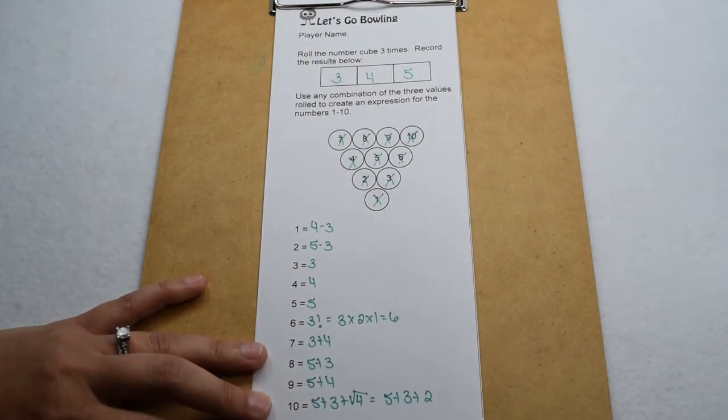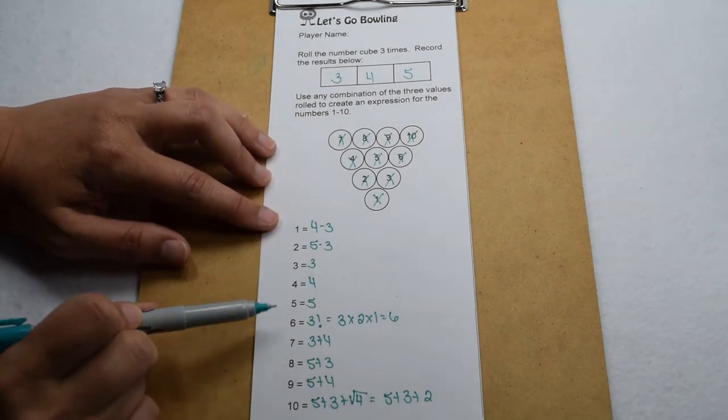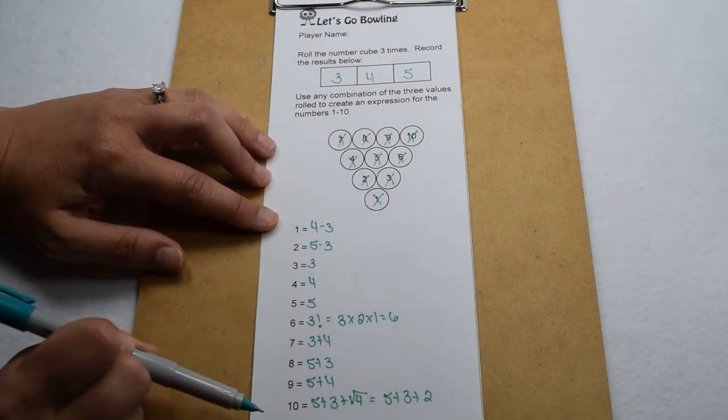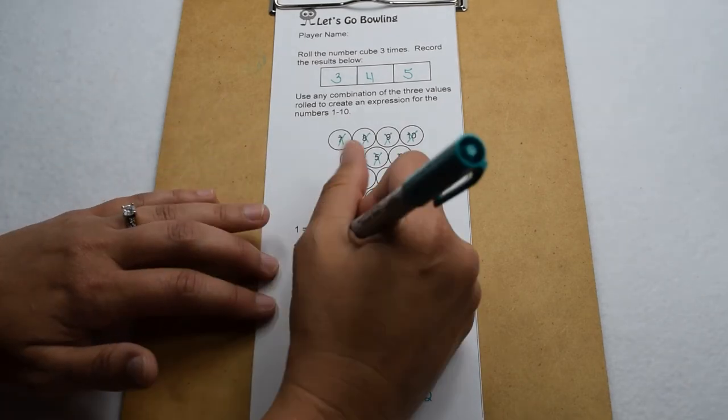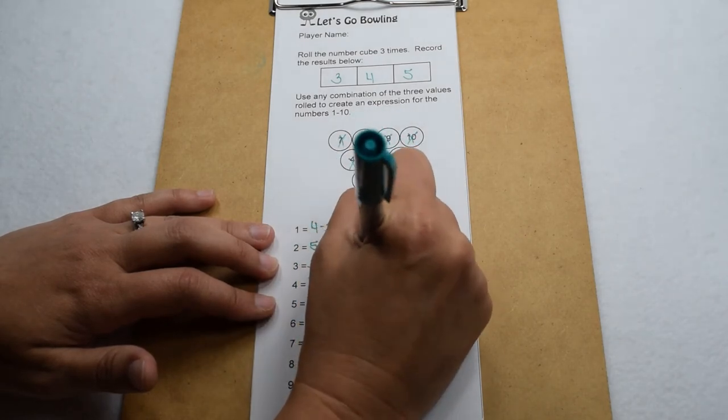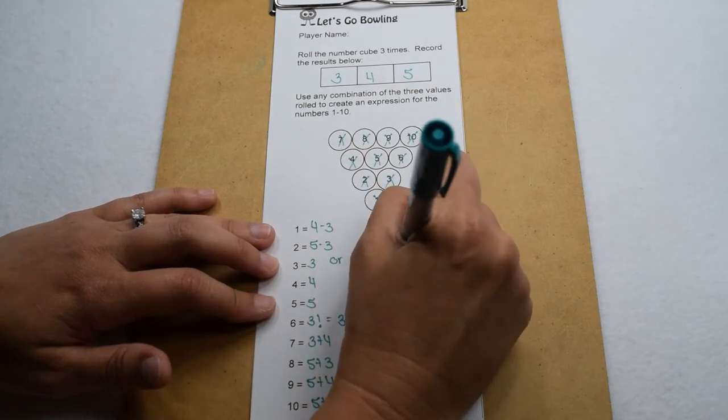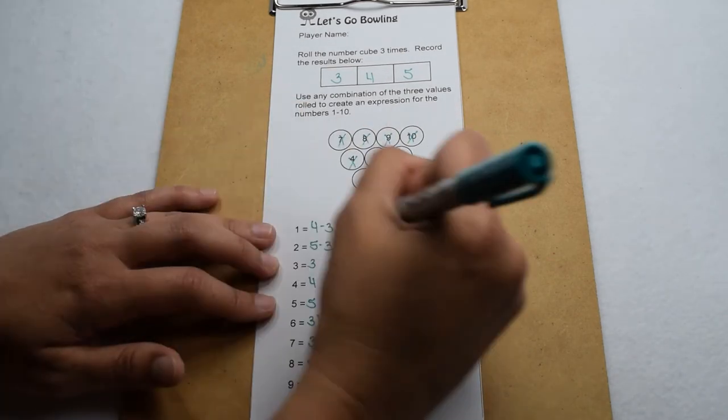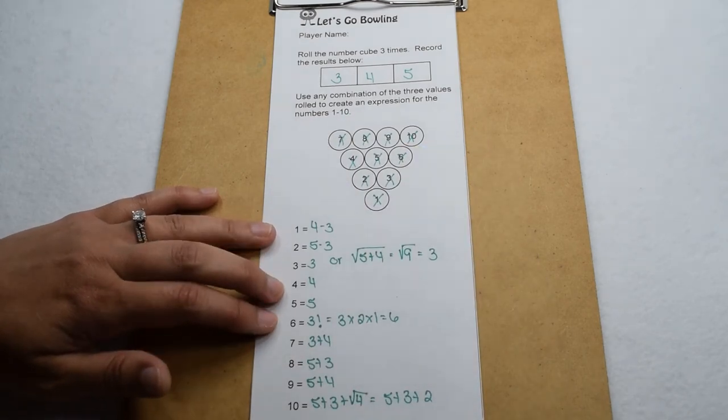That knocks down that pin and gives me my strike. Now this isn't the only combination of operations that everybody could use to get one through ten. Different teams might come up with different combinations. For example, instead of crossing off three, instead we could use more of our square roots and add together square root of five plus four. Five plus four gives us nine, and then we take the square root of nine, so that gives us three.